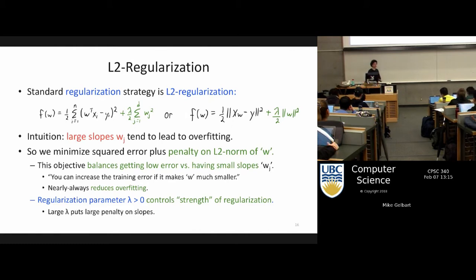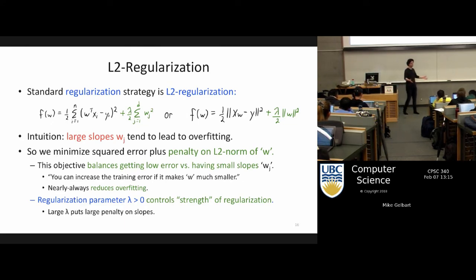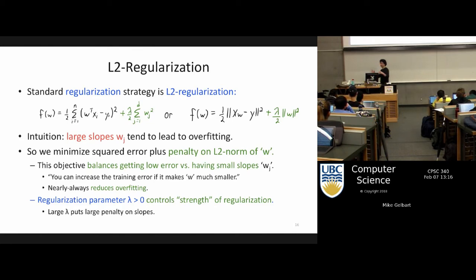Lambda is another hyperparameter — we'll talk about that more, but it controls the strength of the regularization. If lambda equals zero, it's just no regularization, so we can think of no regularization as a special case when lambda is zero.